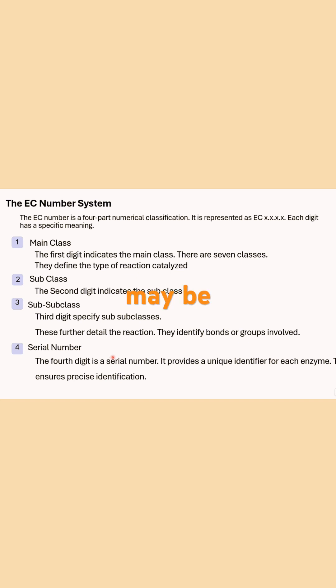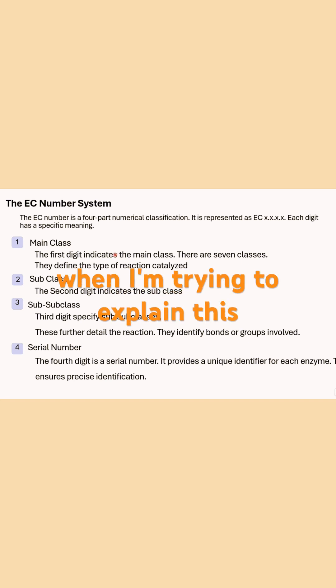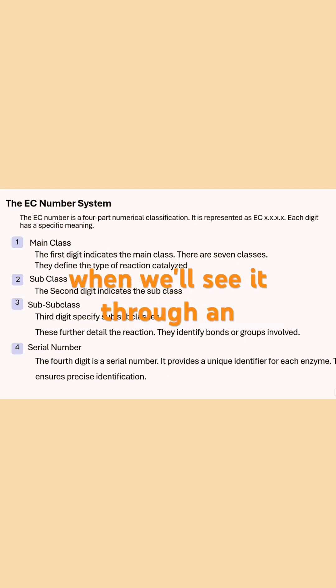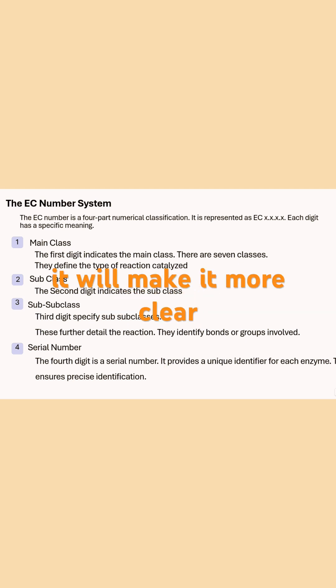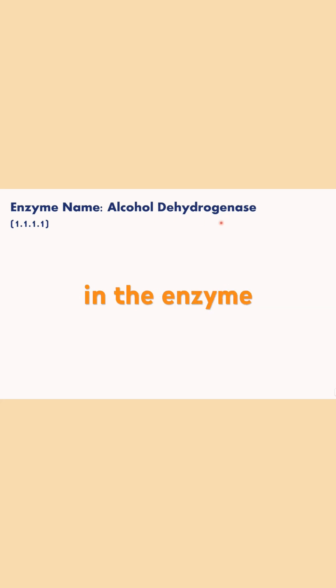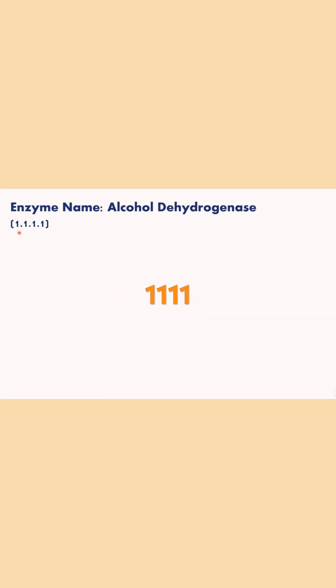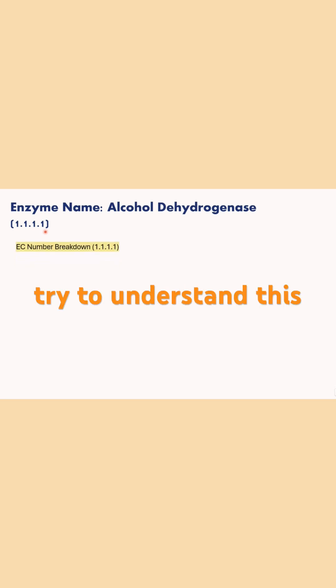This may sound confusing, but when we look at an example it will become clearer. Let's take the example of alcohol dehydrogenase, where the EC number is 1.1.1.1.